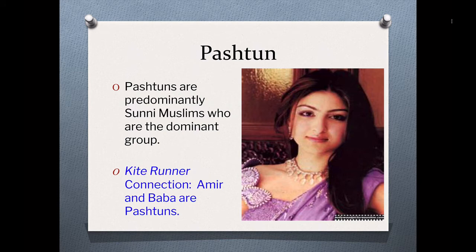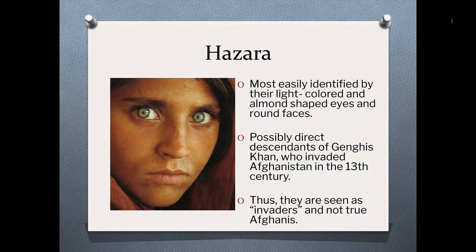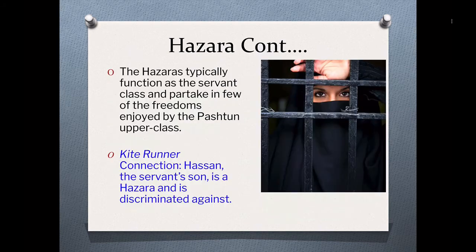The Pashtun are predominantly Sunni Muslims and the dominant group in Afghanistan. In Kite Runner, Amir and Baba are Pashtun. The Hazara are most easily identified by the shape and color of their eyes. There is an argument that they are direct descendants of Genghis Khan, an invader of Afghanistan during the 13th century, so they are often seen as invaders rather than original Afghans, which is used to discriminate against them. They typically function as the servant class. In Kite Runner, Hassan — who is Baba's servant's son — is a Hazara and is discriminated against, even though Hassan and Amir, roughly the same age, become very good friends.